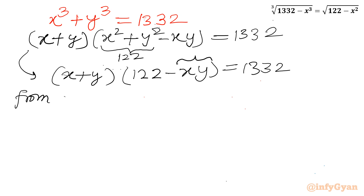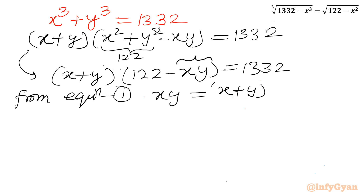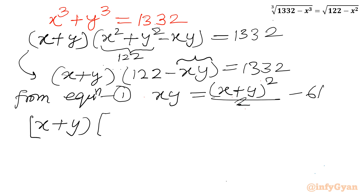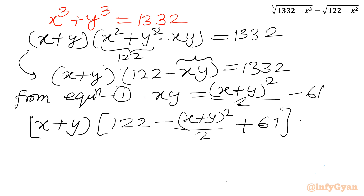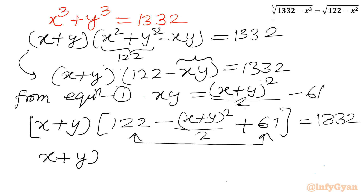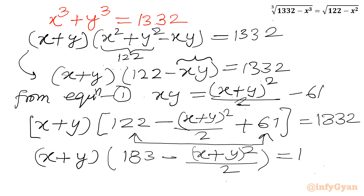Now we apply the value of xy from equation 1, where xy equals (x plus y) squared over 2 minus 61. Substituting, we get: (x plus y) times (122 minus (x plus y) squared over 2 plus 61) equal to 1332. Since 122 plus 61 equals 183, this simplifies to (x plus y) times (183 minus (x plus y) squared over 2) equal to 1332.